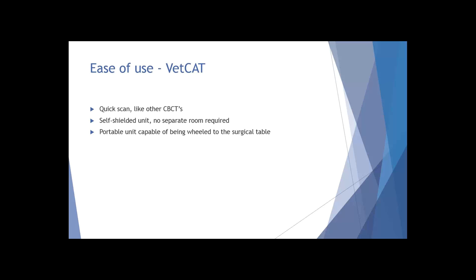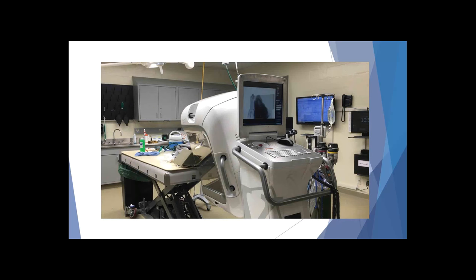It's a very quick scan — most Cone Beam CT units are. The nice thing about the VetCat, which is the only unit I've personally used, is that it's a self-shielded unit, so you don't need a separate room. You don't have to put the patient on a separate cart and wheel them away. It's a portable unit that can be wheeled to the surgical table. You can run your scan right there. I have a video here to demonstrate just how quick that is.